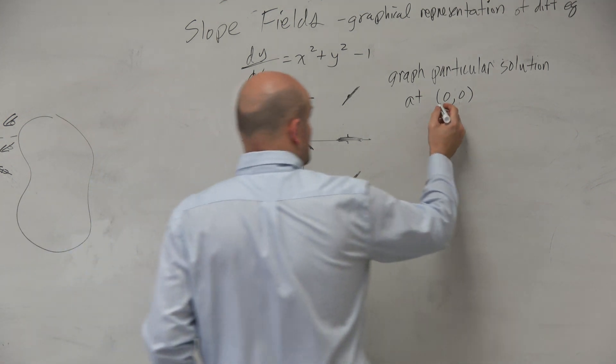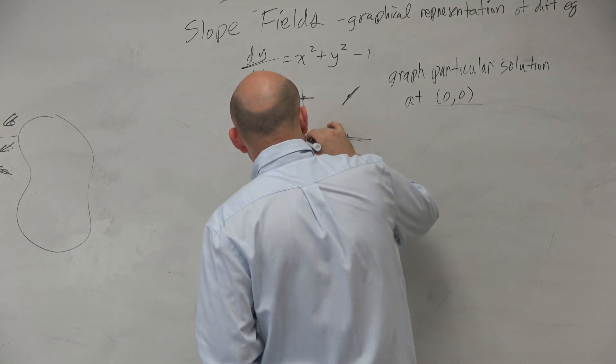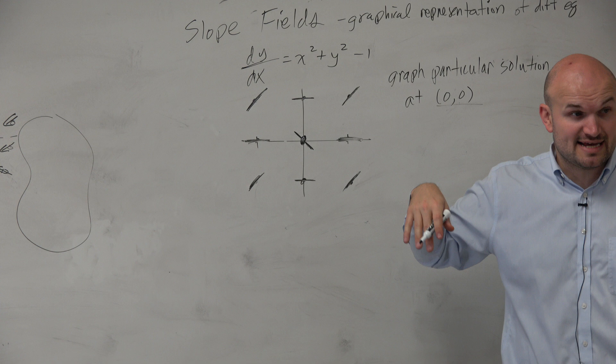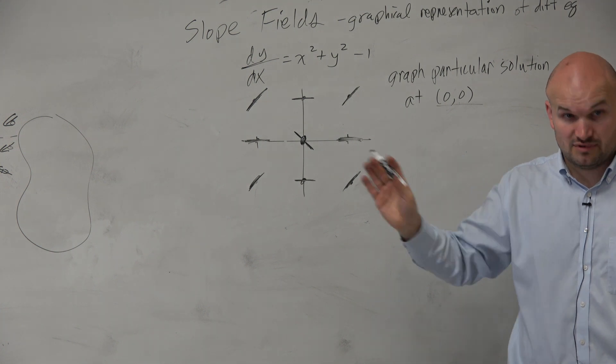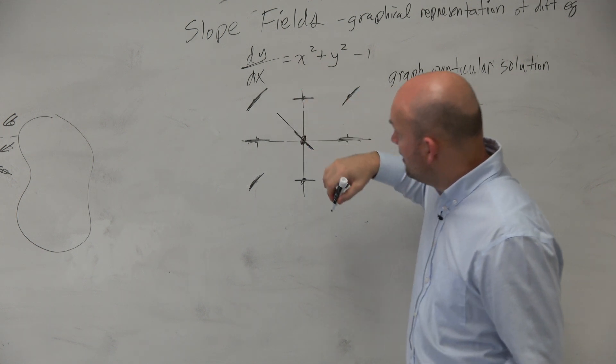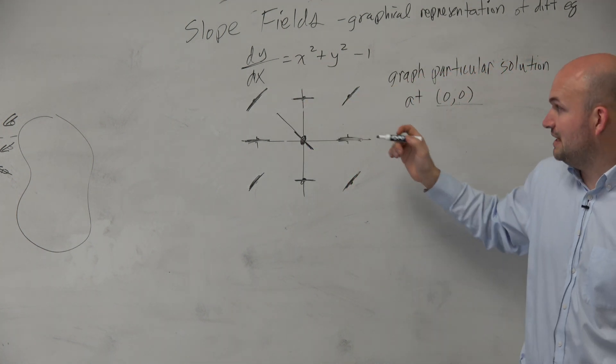so now let's sketch the graph, or sketch the particular solution, the graph of the particular solution. So we're starting at 0. Now as we go to the left, are we being shot up or shot down? No. We're going to be shot up, right? I mean, it's kind of telling you, hey, all right, you're going right here.